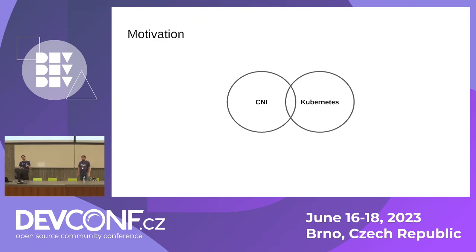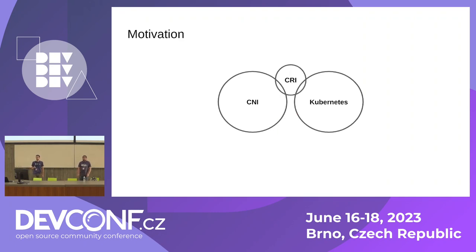You might get the impression that Kubernetes and CNI are bound together, but the reality is there's no direct connection. What you do have is that Kubernetes understands something called CRI, the container runtime interface, and this actually speaks to CNI. This means there is no way for CNI to communicate directly to Kubernetes — Kubernetes doesn't know CNI even exists.